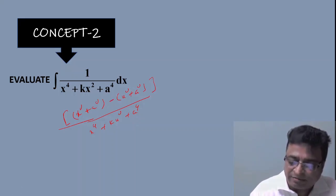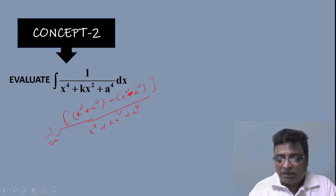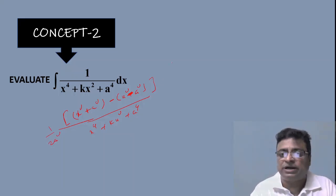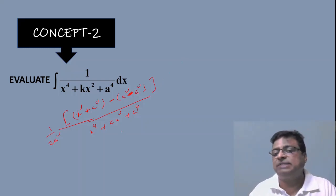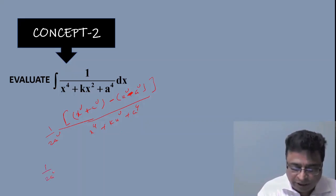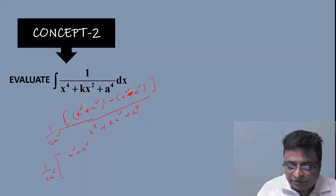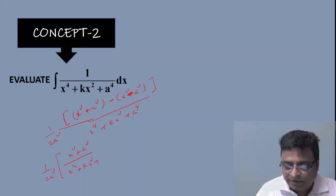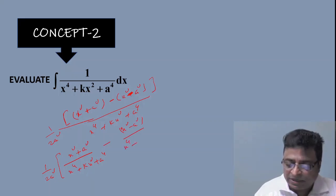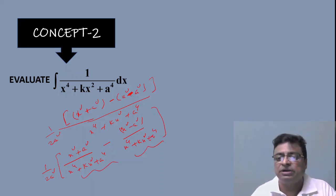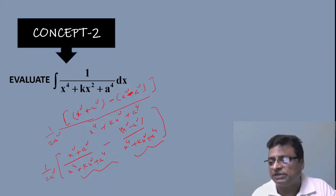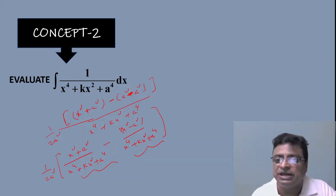After separation, balancing with 1/(2a²), the x² terms cancel and we get the same familiar forms from Concept 1 — namely (x² + a²)/(x⁴ + kx² + a⁴) and (x² − a²)/(x⁴ + kx² + a⁴). For each, apply Concept 1: divide numerator and denominator by x² and substitute x + a/x or x − a/x = t. The answer follows easily. This is the key technique — converting the unknown into the known.